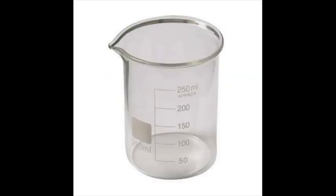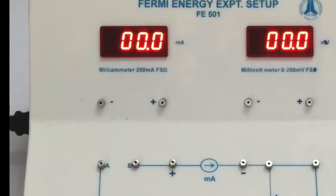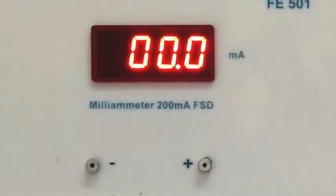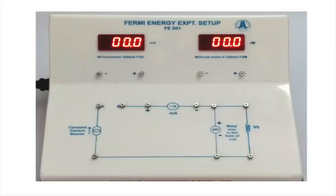This is a beaker to provide a hot water bath to the test tube. Now take a look at the unit on the chassis. At its top to the left is this milliammeter. To the right side, this is the voltmeter.